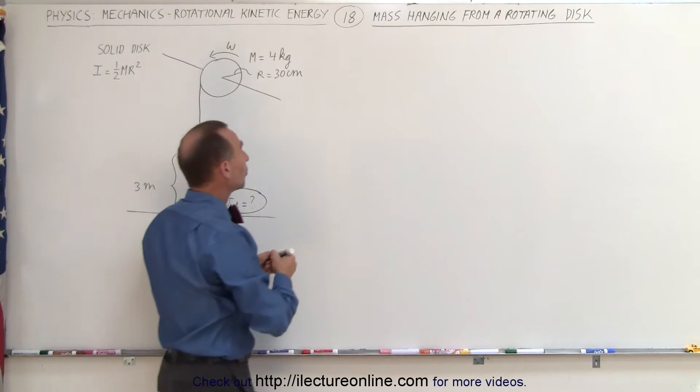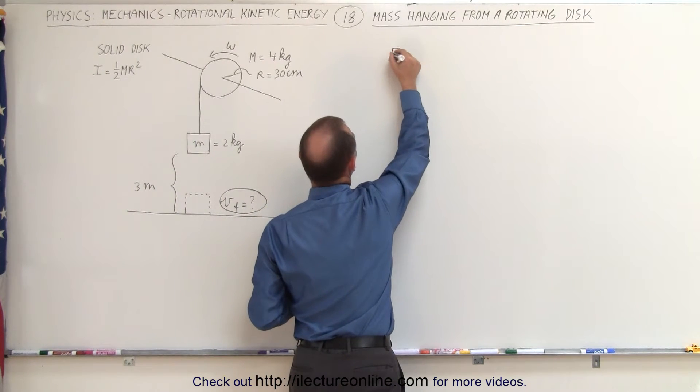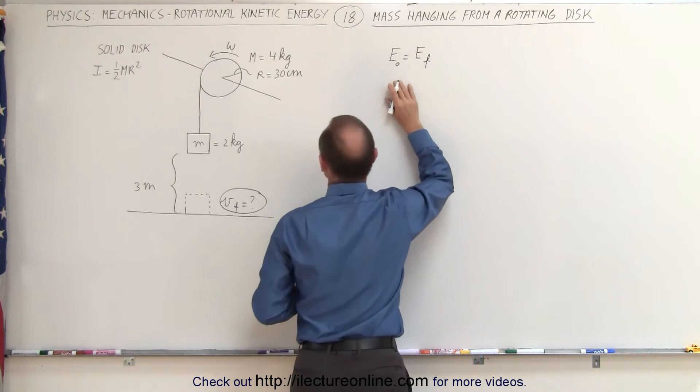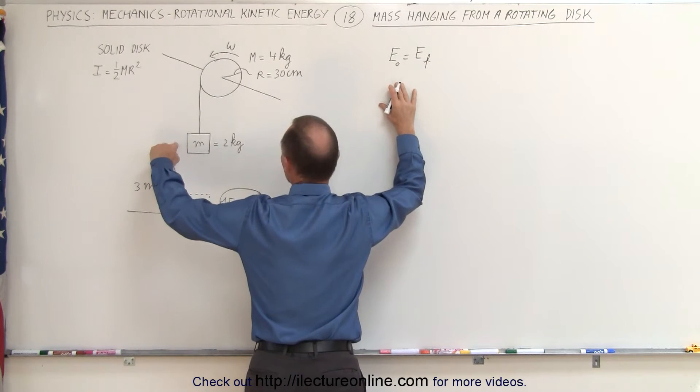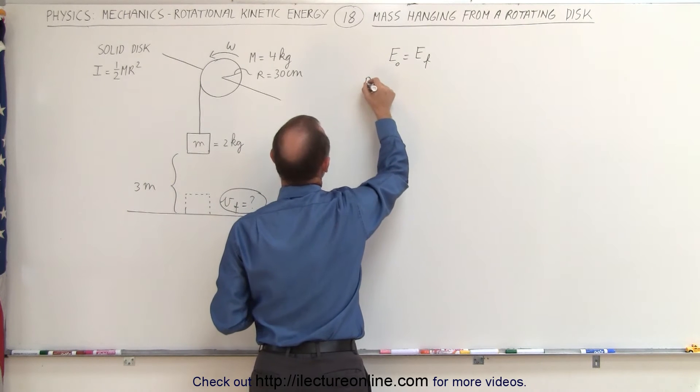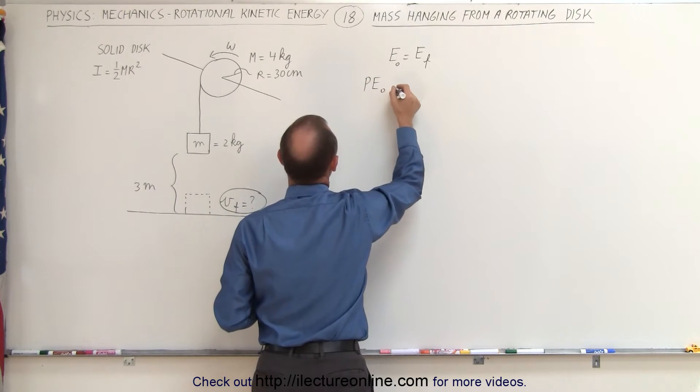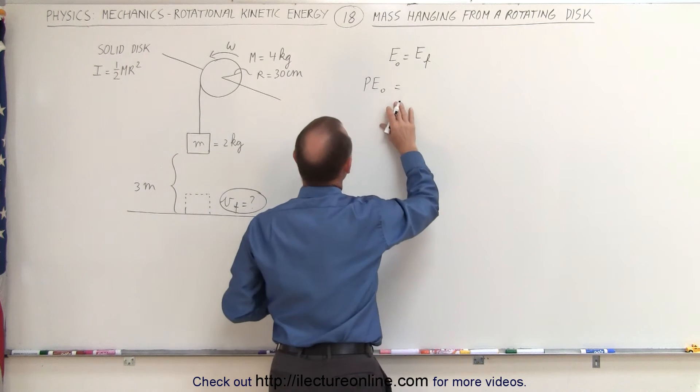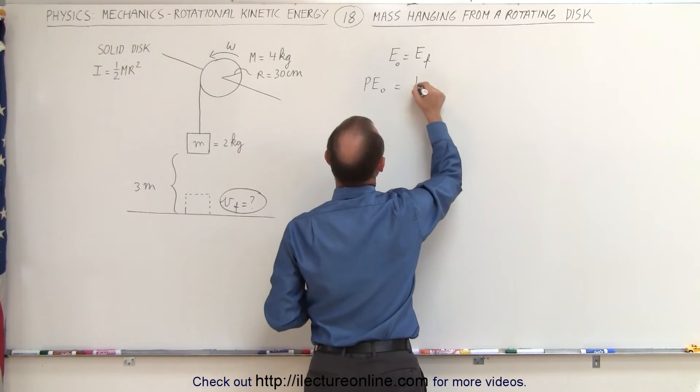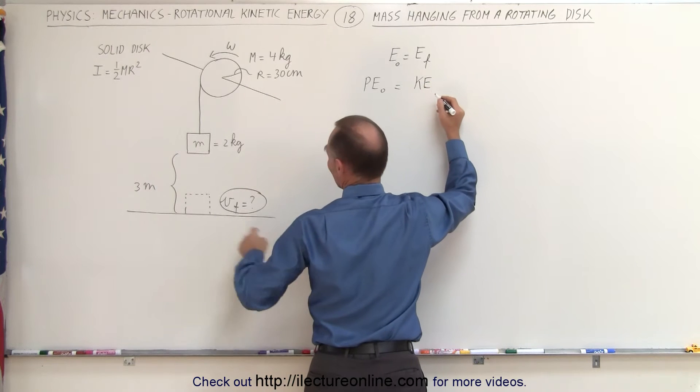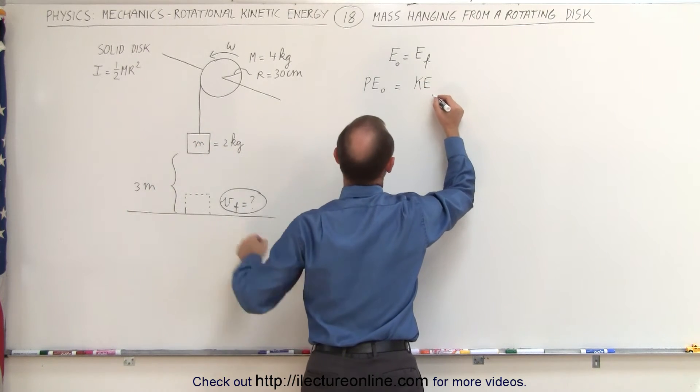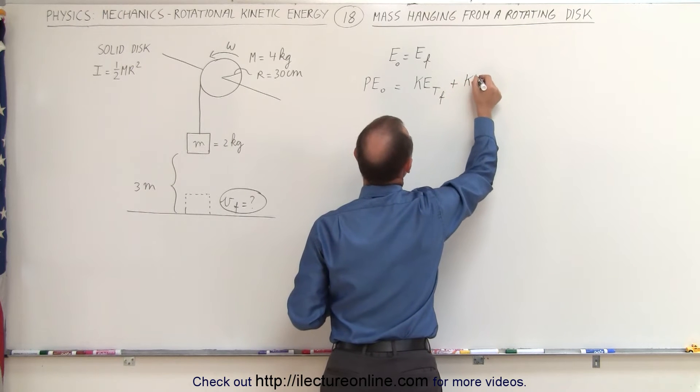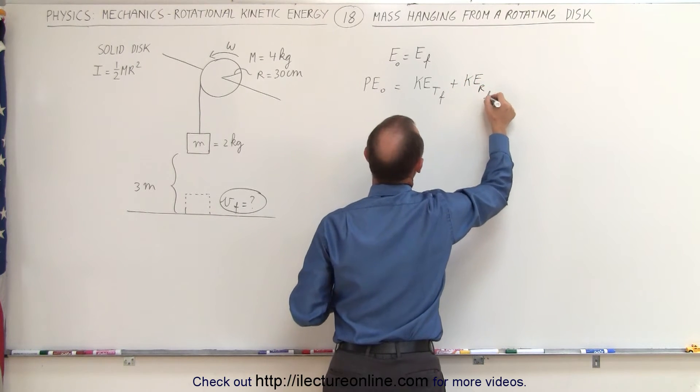We use the equation that energy initial of the whole system equals energy final. The initial energy is wrapped up in the potential energy of the mass. So we can say that the potential energy initial will have to be equal to the kinetic energy of the mass, the translational kinetic energy final, plus the rotational kinetic energy final of the disk.